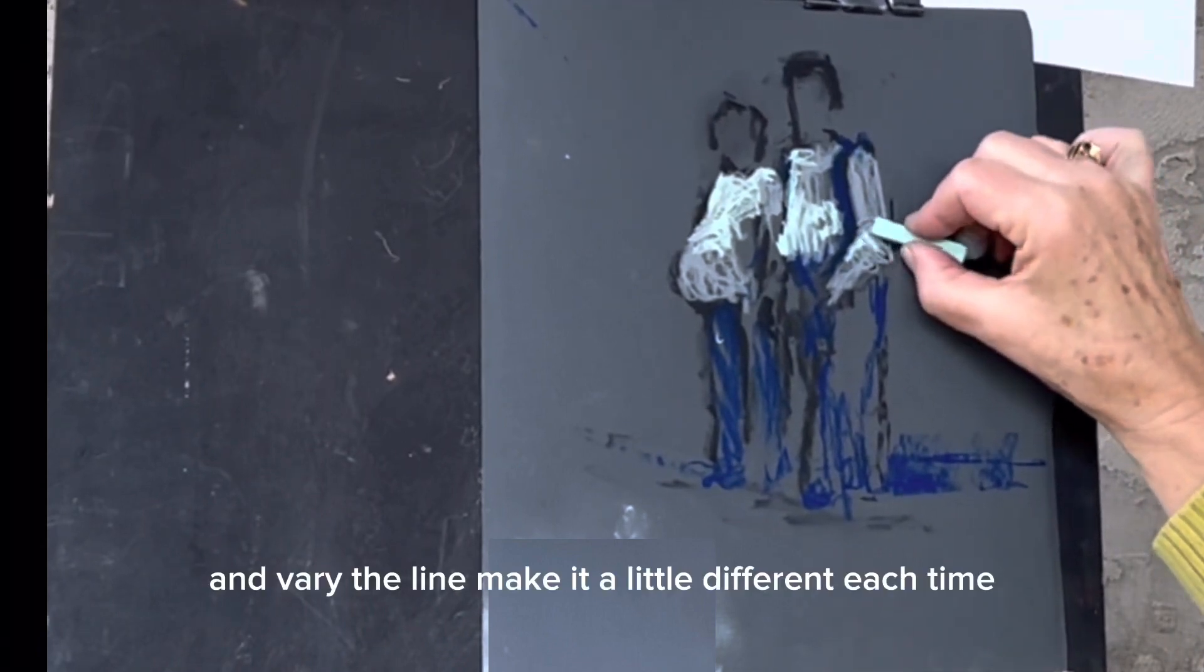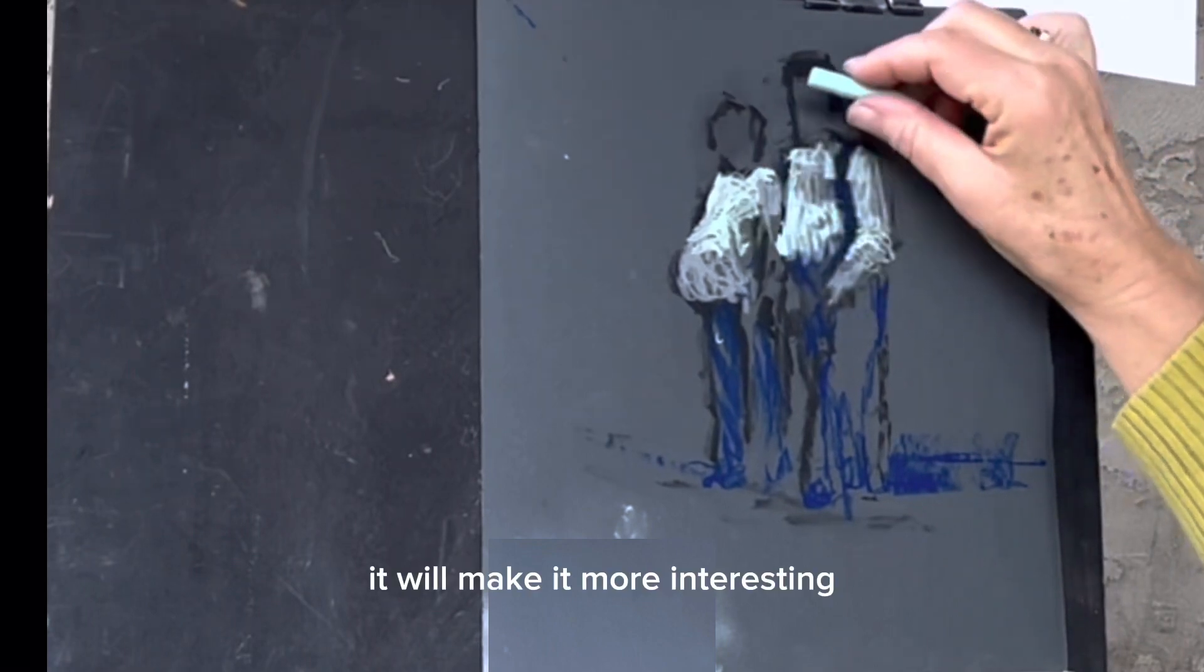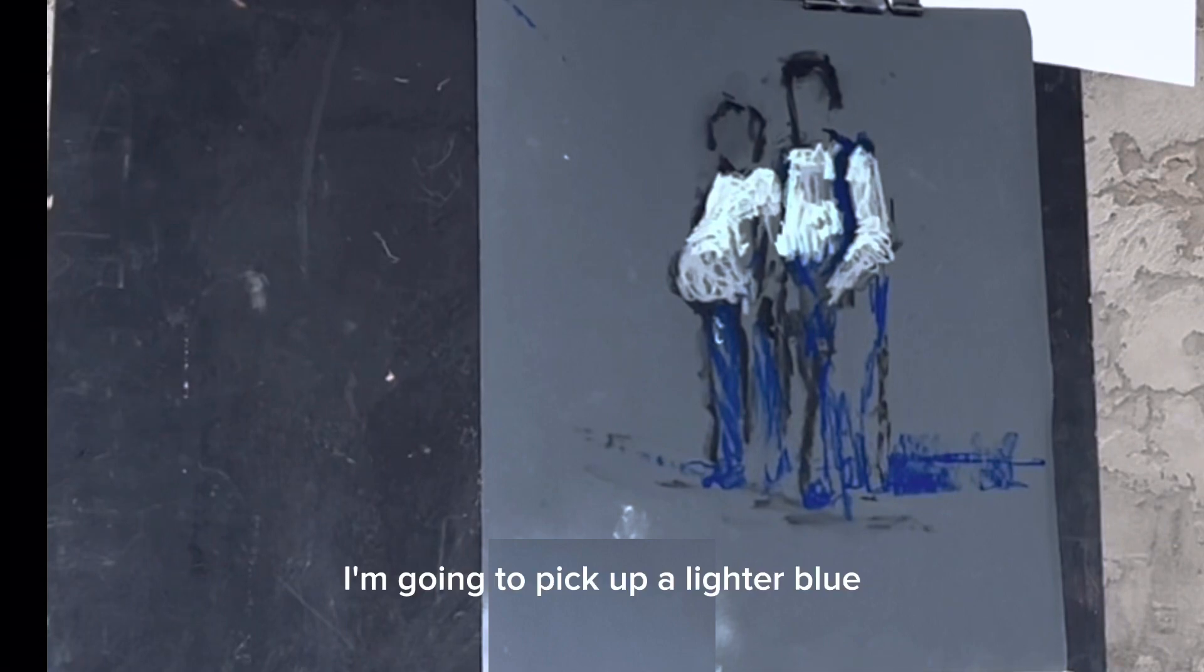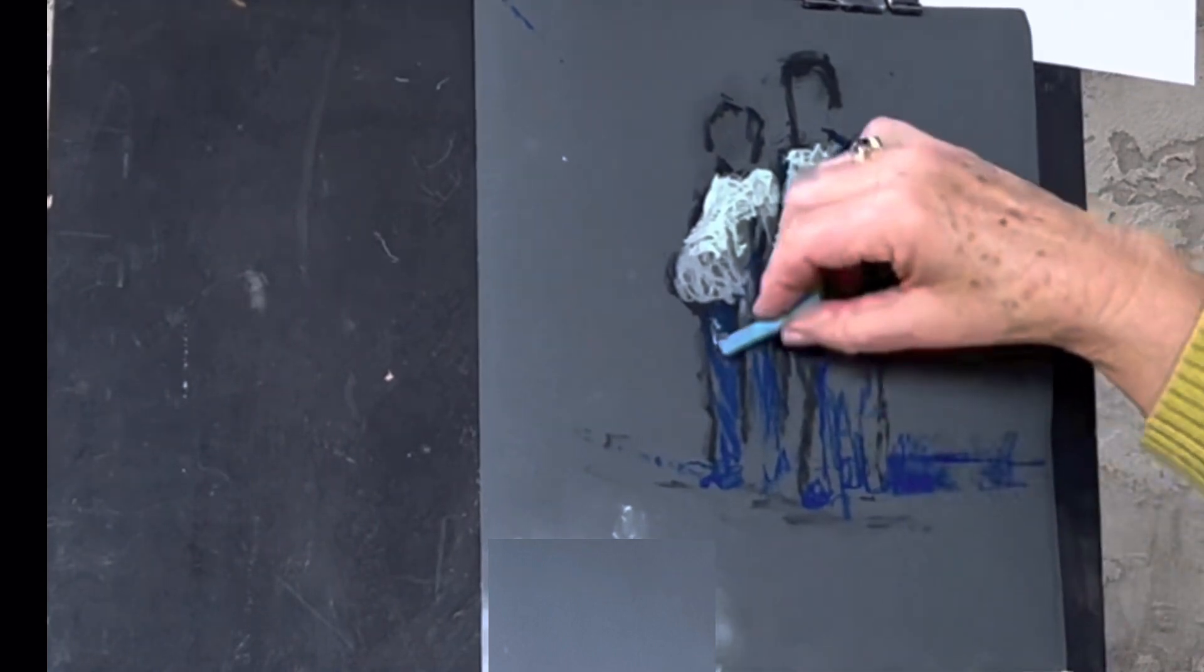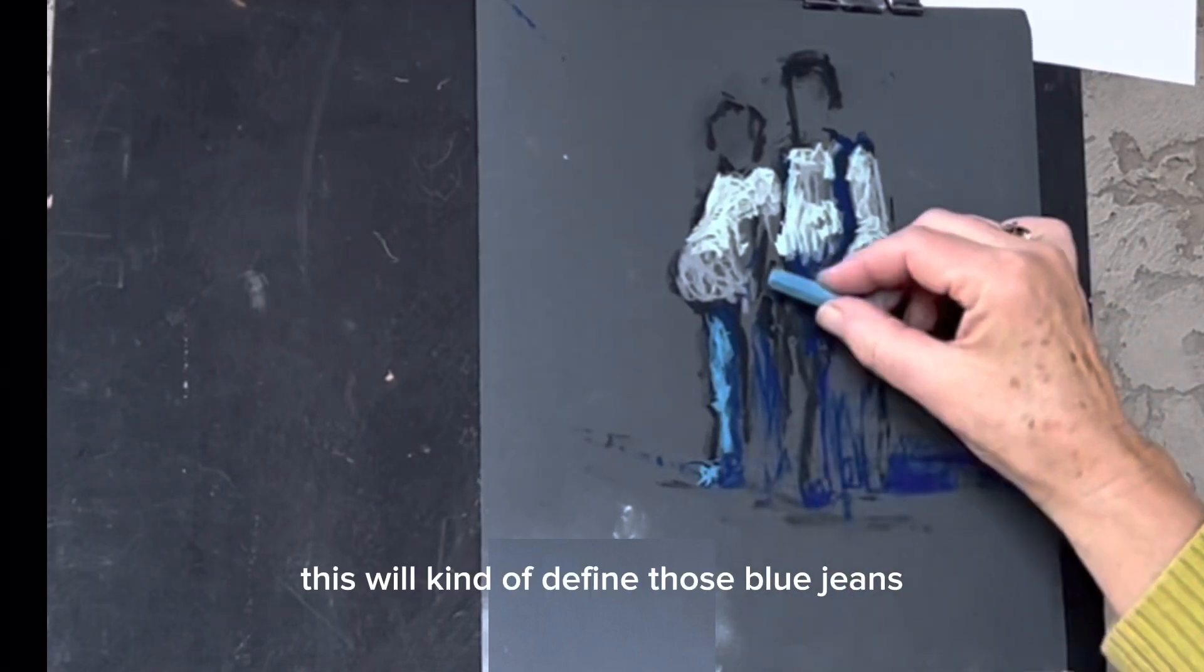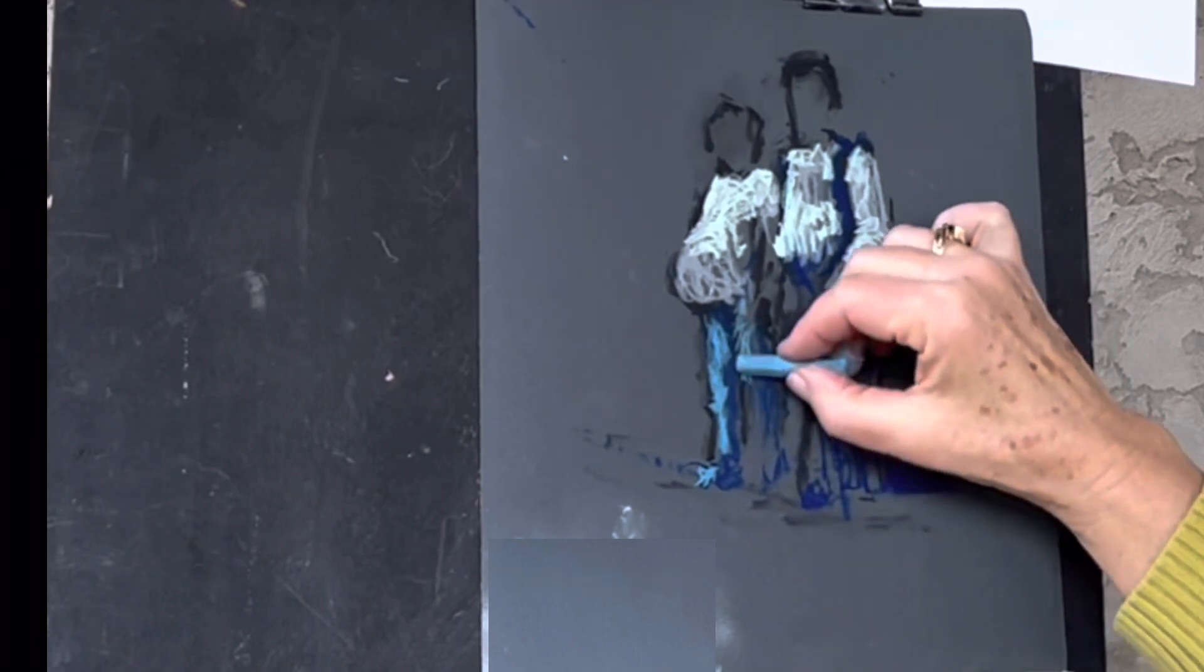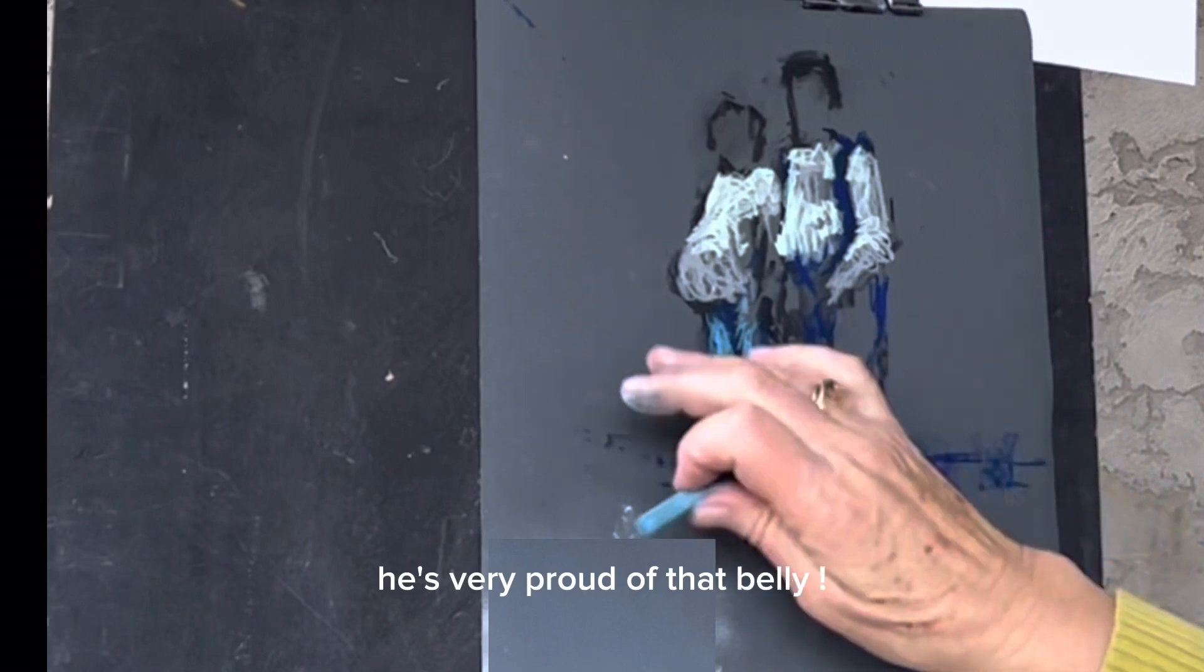And vary the line, make it a little different each time, it will make it more interesting. I want some different colors. I'm going to pick up a lighter blue. I need kind of a peach color for the skin. This will kind of define those blue jeans. There's a shadow under that belly. You don't want to get in the way of that shadow. He's very proud of that belly.